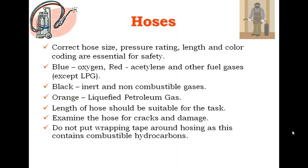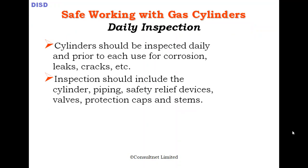For the daily inspection checklist: cylinders should be inspected daily and prior to use for collision damage, leaks, and cracks. The inspection should include the cylinder body, pressure relief device, valve protection caps, and fittings. Regulators, cylinder valves, and other equipment should be taken out of service if they are damaged — including damaged regulators or hoses.